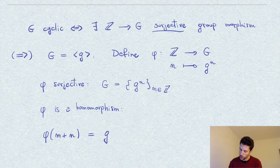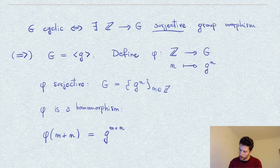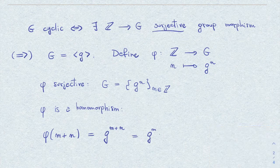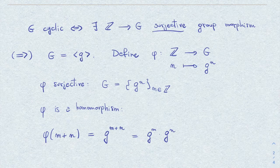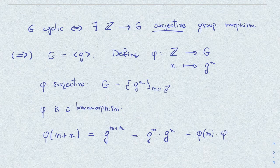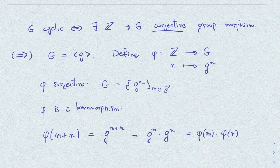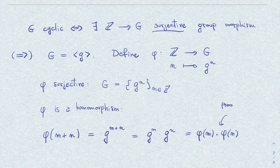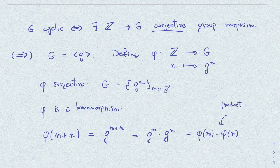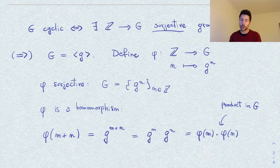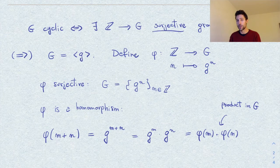and this is g power m plus n. Now this I can also write it as g to the m times g power n, and this by definition is equal to phi of m times phi of n, where this dot here is precisely the product in G. So this concludes this part of the proof that if the group is cyclic, then there exists such a surjective homomorphism.